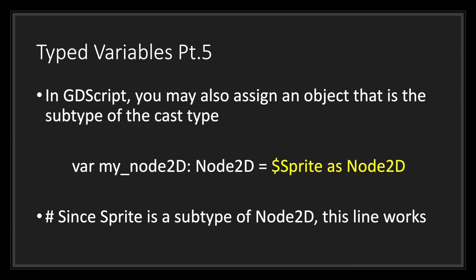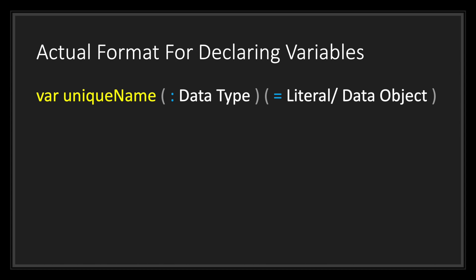Now that we've gone over different ways of declaring variables, let's review the full format. The mandatory pieces are the keyword var followed by your unique name. You can optionally make it a typed variable using the colon symbol followed by your data type. You also have the option of assigning a value using the assignment operator — the equal sign — followed by your literal or data object. You can combine these by using the colon followed by the assignment operator and your literal value, assigning both the value and its data type to your typed variable.